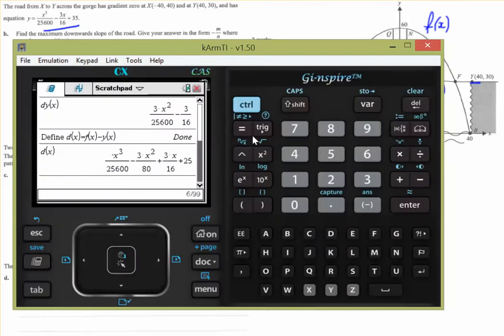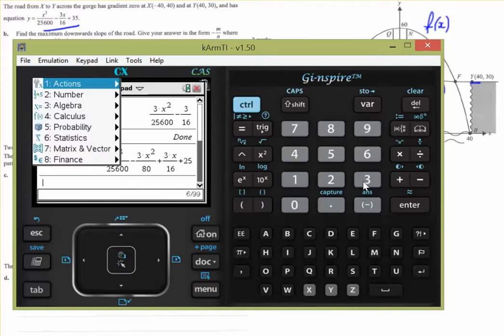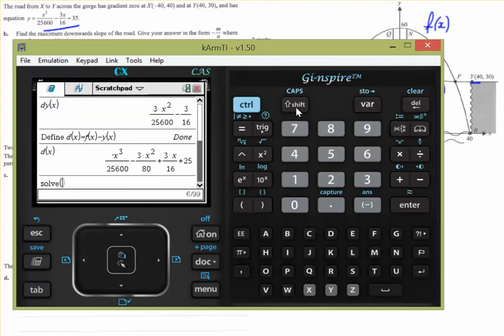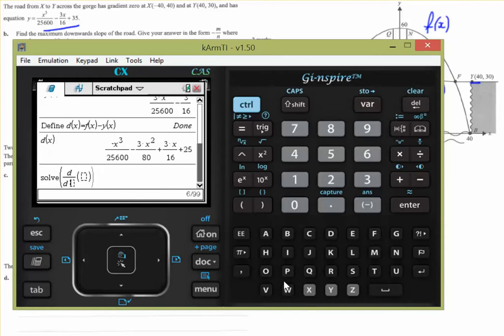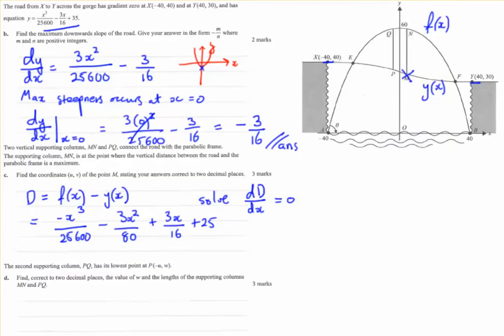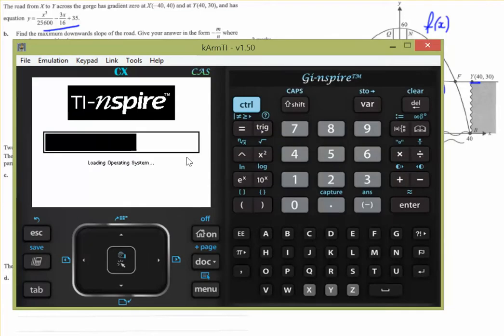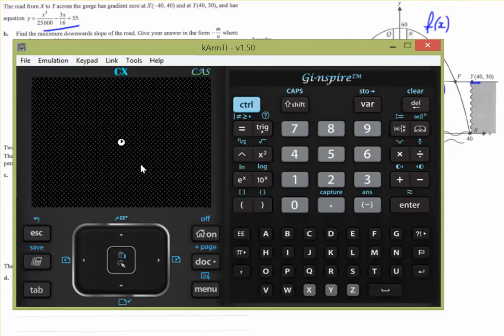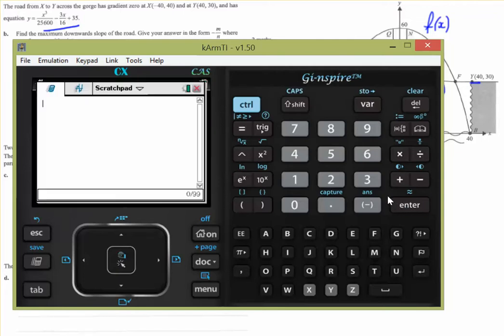Let's solve. We'll go menu, 3, 1. We want to solve the derivative. Oh, that one's glitched. Let's try again. Sometimes these simulators play up.